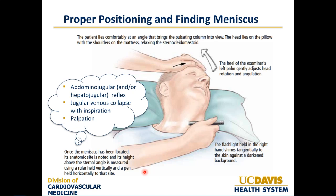Oftentimes we use the hepatojugular reflex, but if the patient is very uncomfortable, the abdominal jugular reflex may be a better technique. Another technique to identify the meniscus is looking for jugular venous collapse with inspiration — when one inspires, the capacitance of the pulmonary vessels increases, causing a paradoxical collapse in jugular venous pressure while all other neck structures become distended. A final confirmatory step is palpation: you should not be able to palpate the jugular vein, but you will be able to palpate a carotid pulsation, so if you palpate a pulsation, look elsewhere to identify the jugular venous pressure.